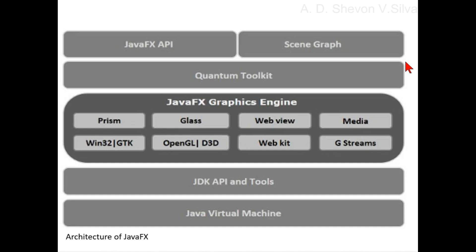Quantum Toolkit: the Quantum Toolkit is used to connect Prism and Glass windowing toolkits collectively and makes them prepared for the above layers in the stack. In simple words, it ties Prism and Glass together and makes them available to JavaFX.